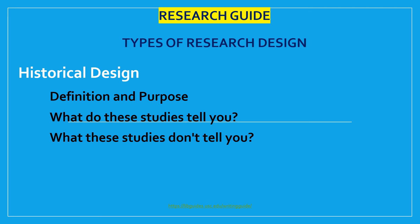The next type is historical design. The purpose of historical research design is to collect, verify, and synthesize evidence from the past to establish facts that defend or refute a hypothesis. It uses secondary sources and a variety of primary documentary evidence such as diaries, official records, reports, archives, and non-textual information such as maps, pictures, and audio and visual recordings. The limitation is that the sources must be both authentic and valid.